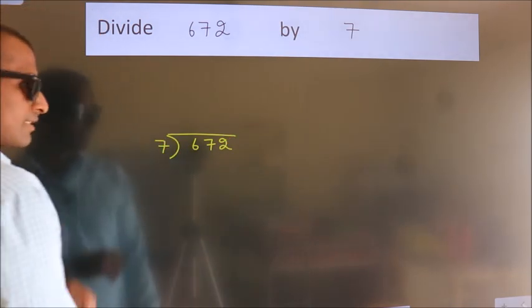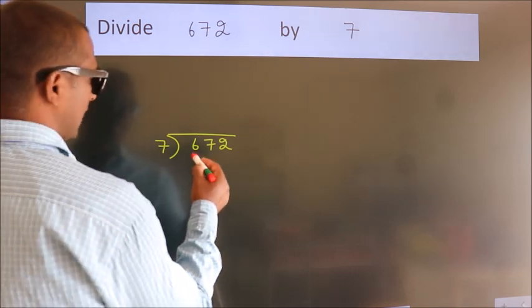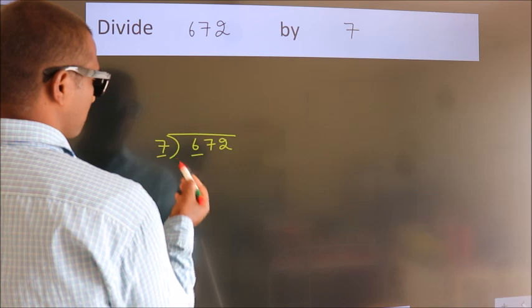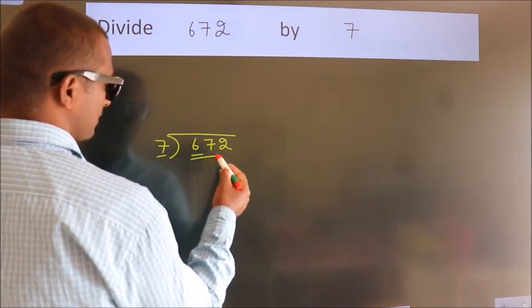This is your step 1. Next, here we have 6, here 7. 6 is smaller than 7. So we should take two numbers, 67.